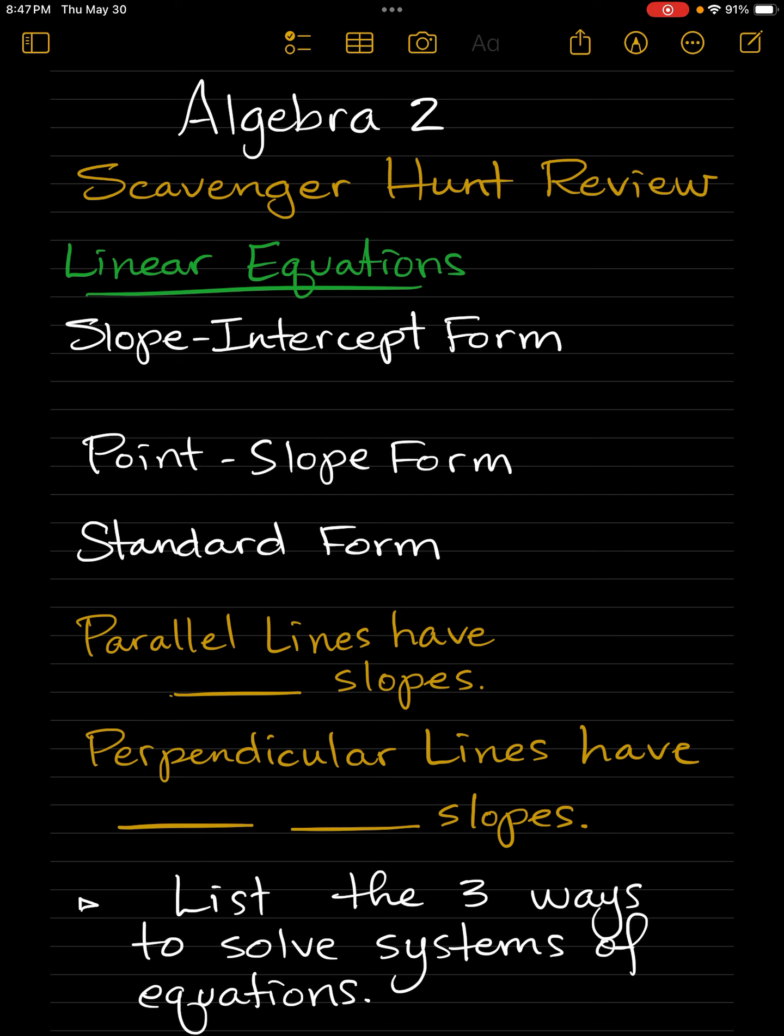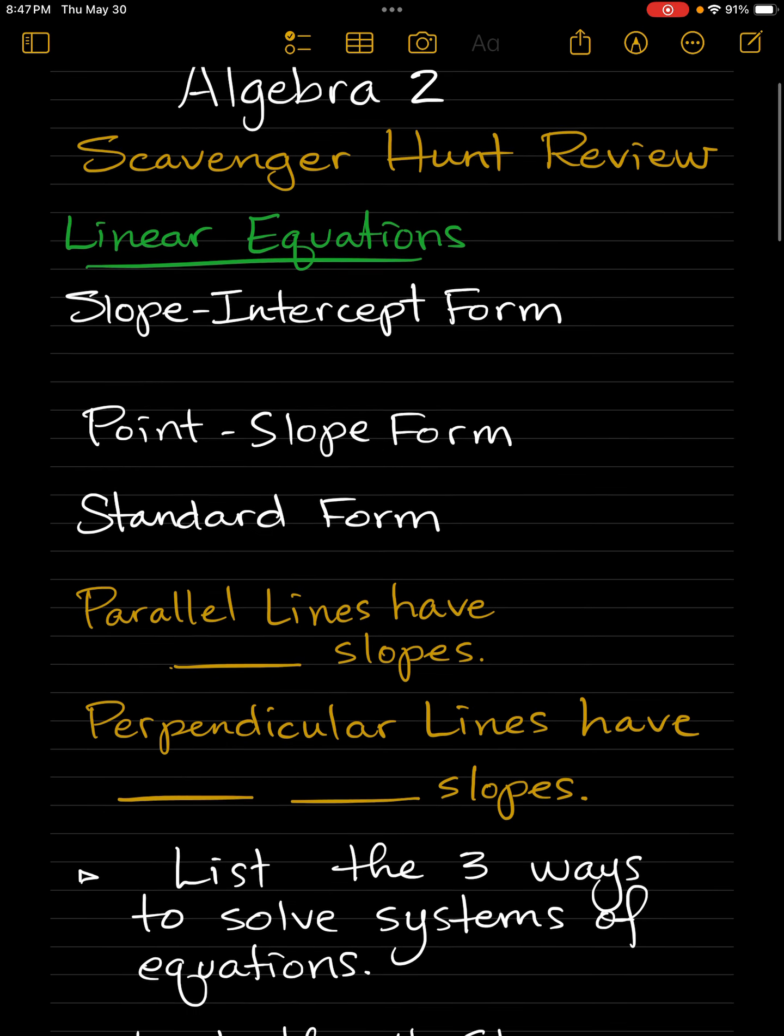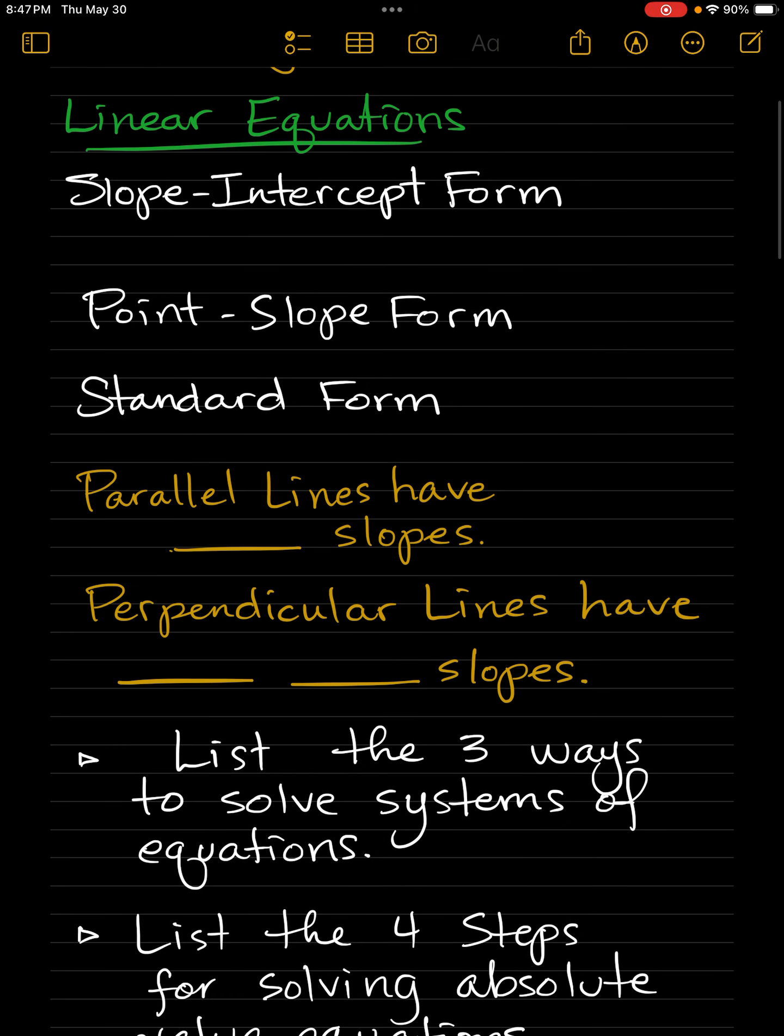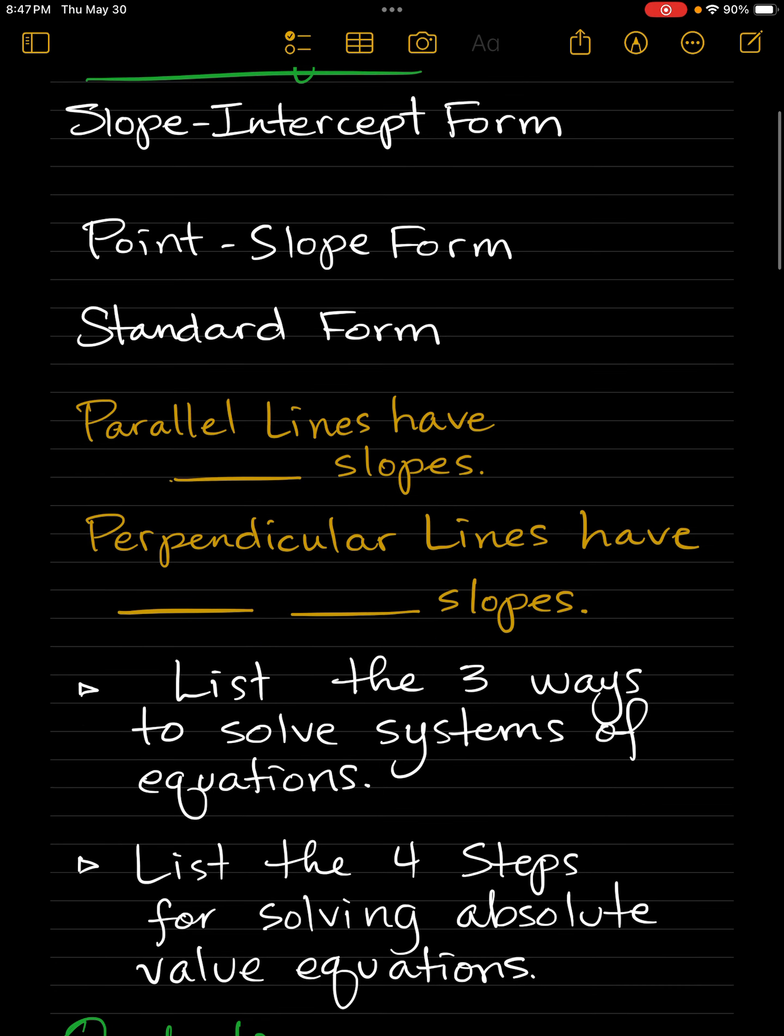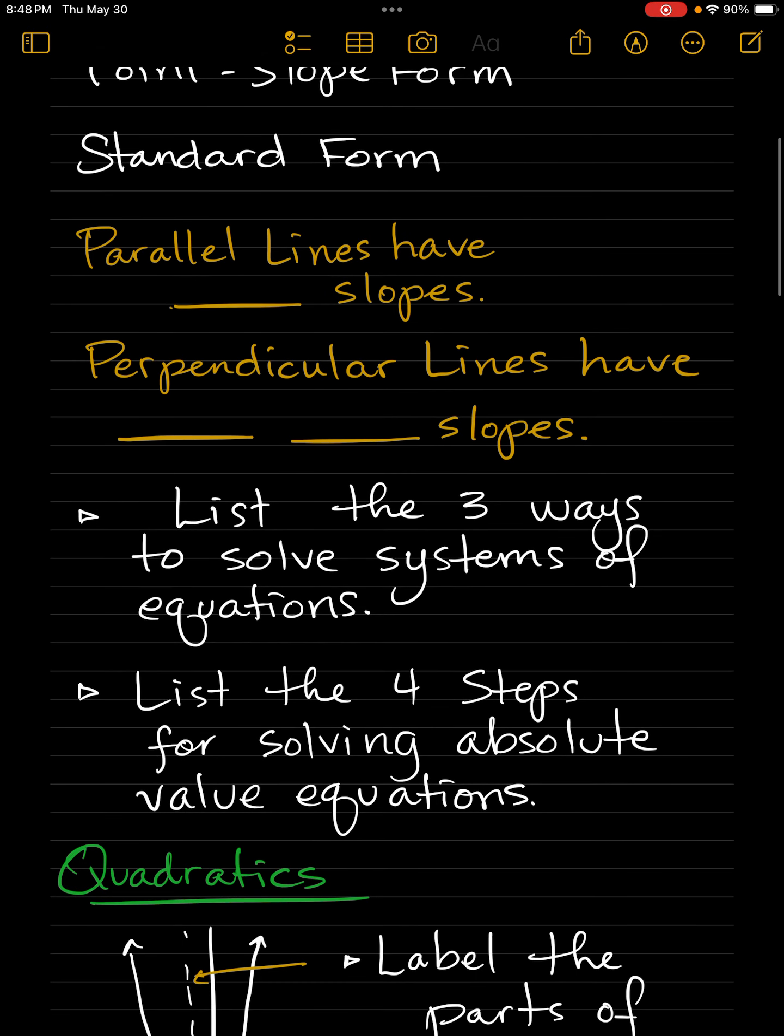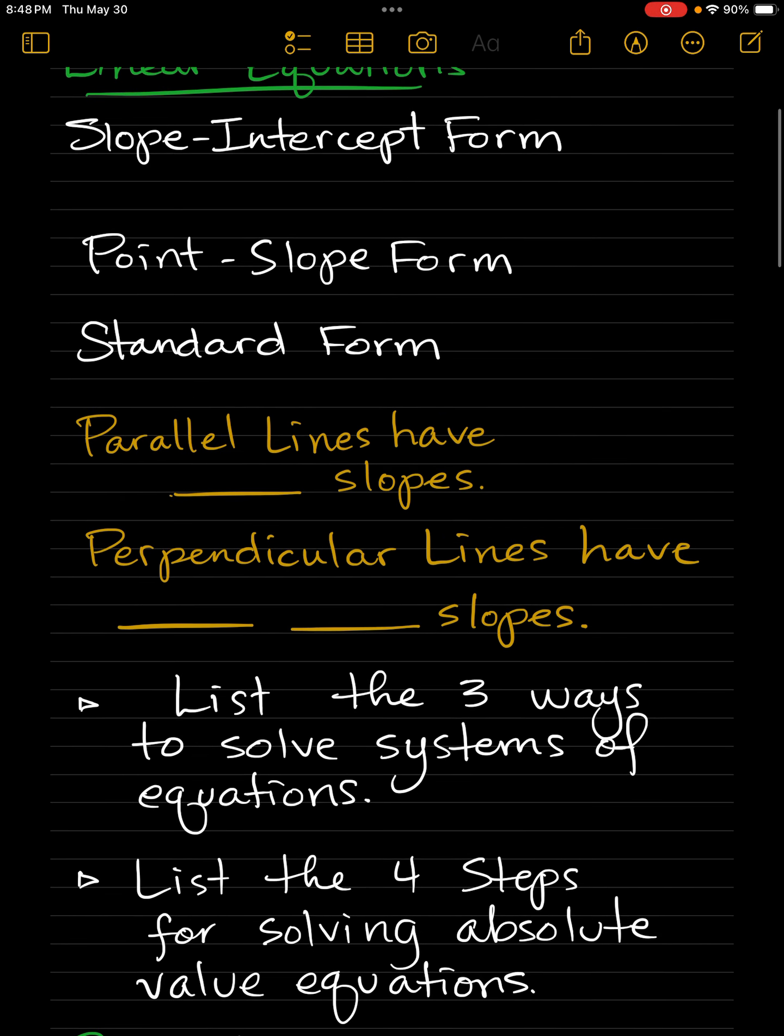Okay, so the first thing I want you to do is write down the different forms for our linear equations. Start with slope-intercept form, then do point-slope form and standard form. Then pause the video to make sure you have time to write those things down, and then you're going to go to the next thing.